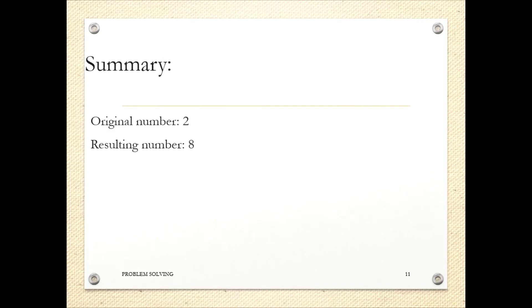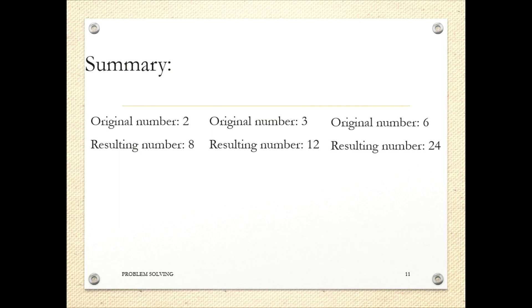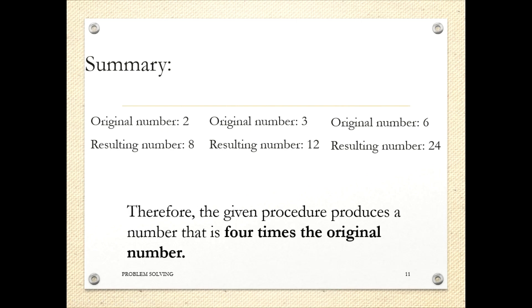Now let's compare the three. Original number 2 gives resulting number 8. Original number 3 gives resulting number 12. Original number 6 gives resulting number 24. By looking at this summary, the resulting number is just a quadruple of the original number: 4 times 2, 4 times 3, 4 times 6. Therefore, the given procedure produces a number that is 4 times the original number.